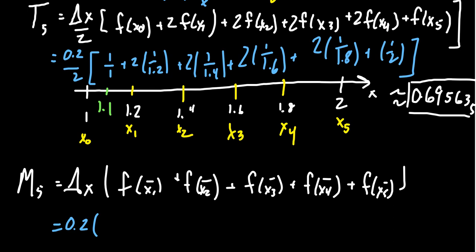Between 1.2 and 1.4, you get 1.3. Between 1.4 and 1.6, you get 1.5. Between 1.6 and 1.8, you get 1.7. And then the last midpoint will be 1.9. And so those are what we're going to do here.